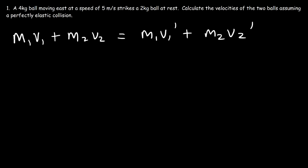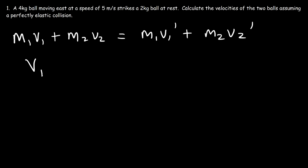For an elastic collision, kinetic energy is also conserved. However, it is not conserved for an inelastic collision — it's always conserved for a perfectly elastic collision. You don't want to use the full kinetic energy formula because it's going to be a lot of work. Instead, use the simplified version: v1 + v1' = v2 + v2'. For elastic collisions, these are the two equations to use when you need to find two missing variables.